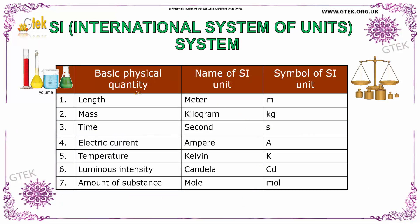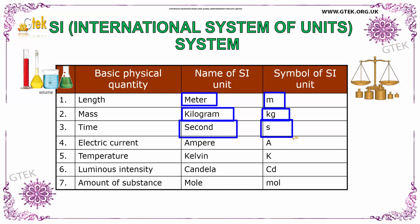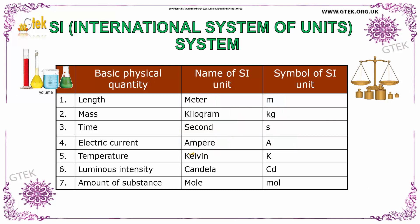These are the basic physical quantities, their relevant SI units, and symbols. For length, it's meter and the symbol is m. For mass, it's kilogram and the symbol is kg. For time, it's second and the symbol is s. For electric current, it's ampere and the symbol is A. For temperature, it's Kelvin and the symbol is K. For luminous intensity, it's candela and the symbol is cd. For amount of substance, it's mole and the symbol is mol.